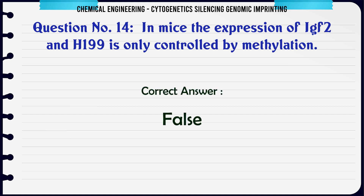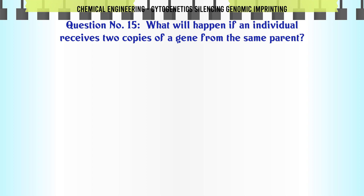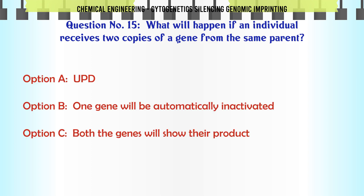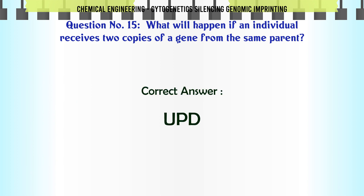What will happen if an individual receives two copies of a gene from the same parent? A. UPD, B. One gene will be automatically inactivated, C. Both genes will show their product, D. Nothing much will be seen. The correct answer is A: UPD.